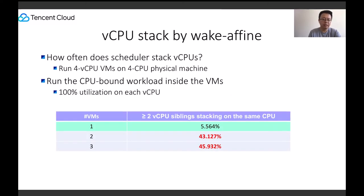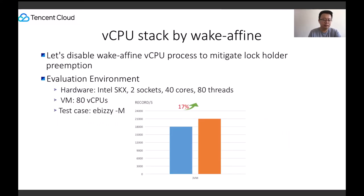Let's see how often the scheduler stacks vCPUs. We can run 4 vCPU VMs on a 4 physical CPU machine and run a CPU-bound workload inside the VM at 100% utilization on each vCPU. The vCPUs are easily stacked in an over-subscribed scenario. Disabling wake-affine for vCPU processes can mitigate lock holder preemption. Testing 380 vCPU VMs running on a 180 physical CPU server, the IBZ score increased by 17% after disabling wake-affine for vCPU processes.